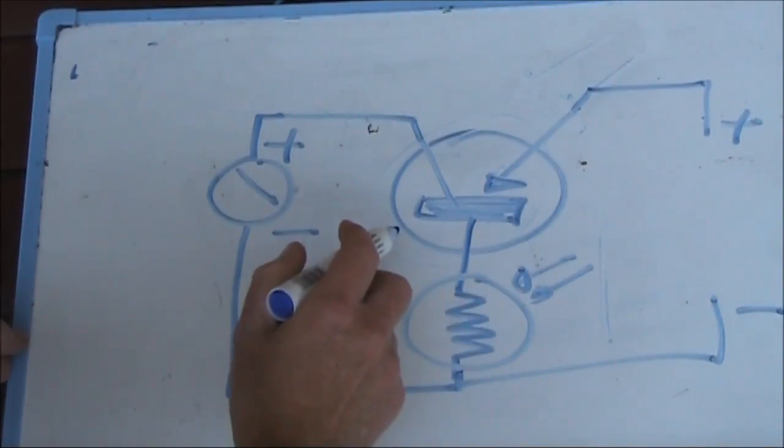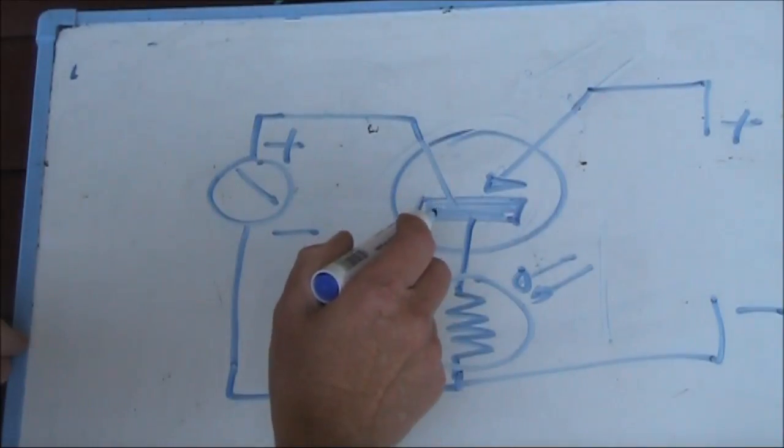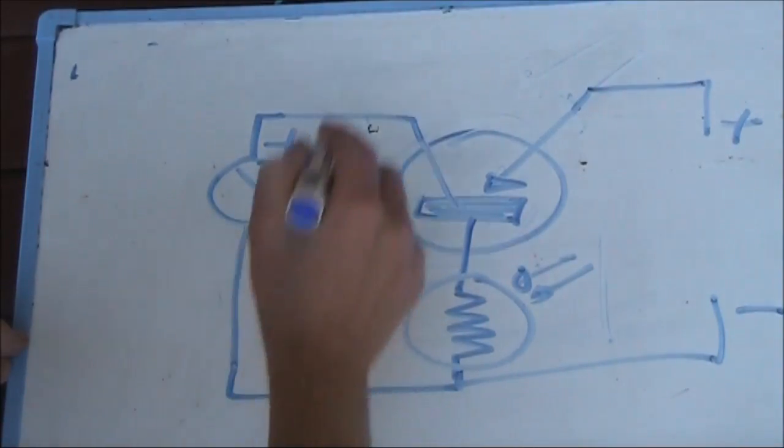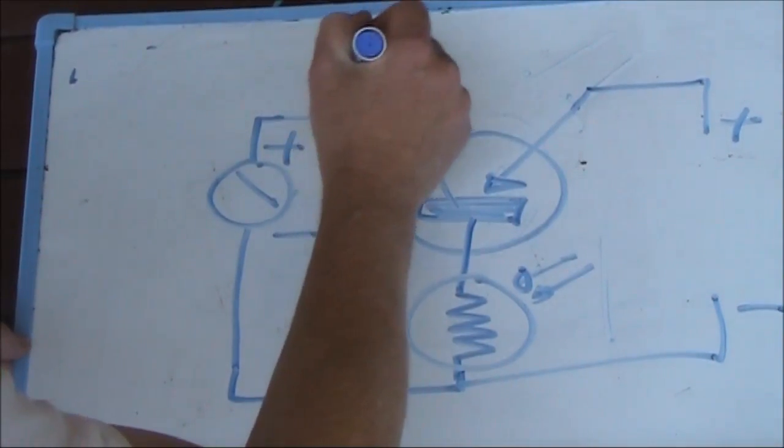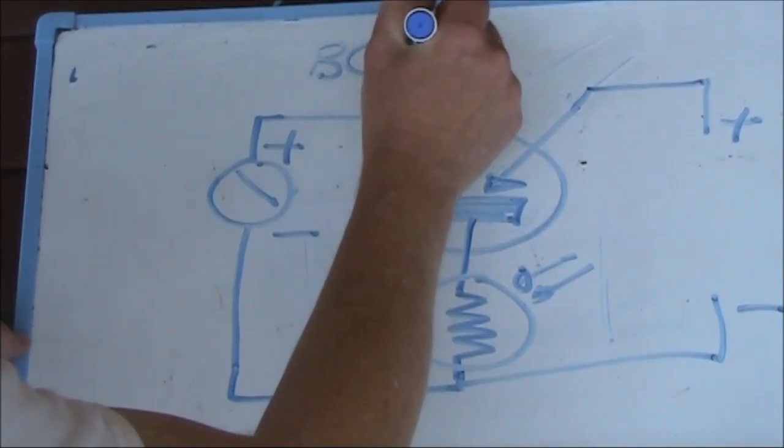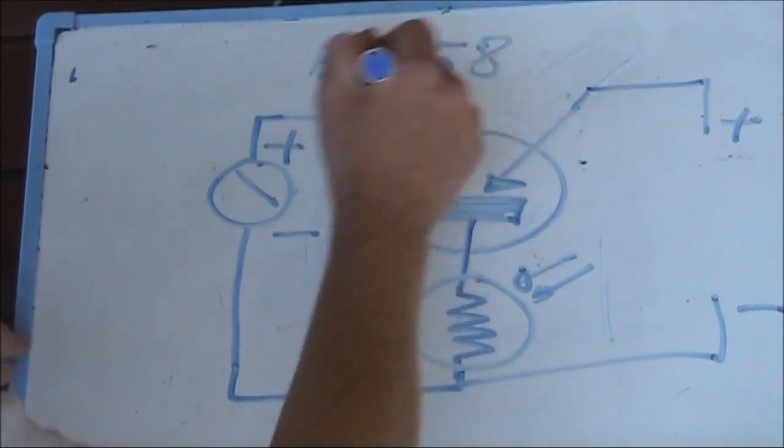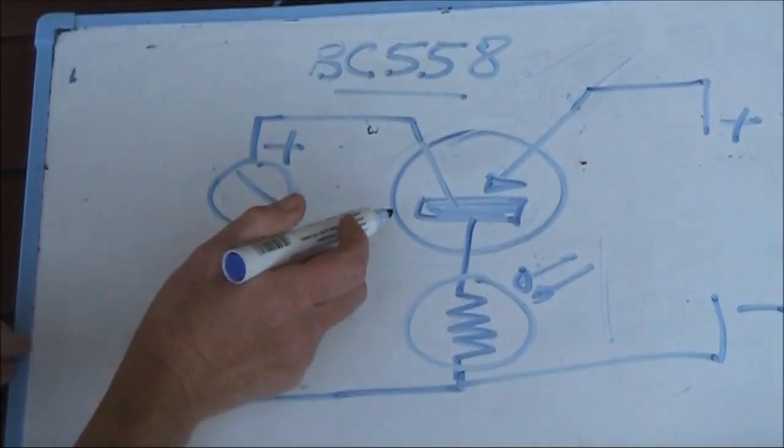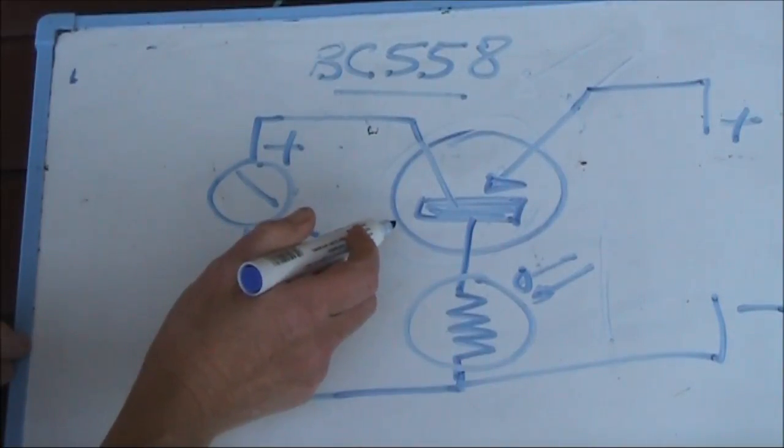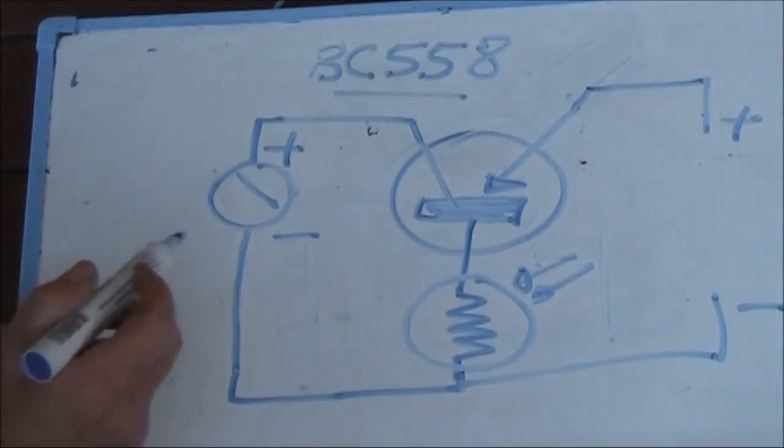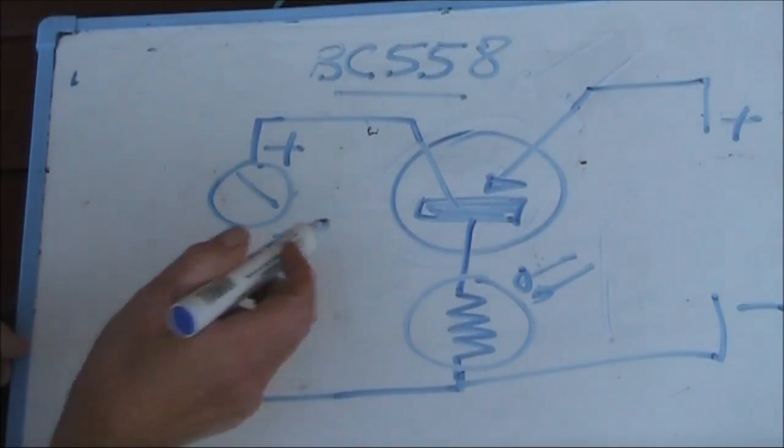Bear in mind, it is a PNP transistor, not an NPN. An NPN is most common. I'll be using a BC558, but any small signal PNP transistor will be fine for this experiment. I'll put some equivalents up on the screen.